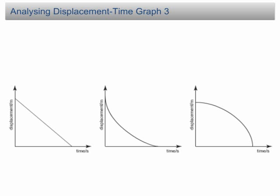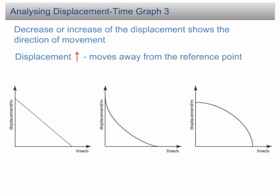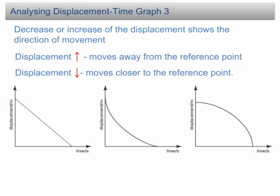Analyzing displacement time graph 3. Let's look at a few more examples. This time, we are going to study the motion where the displacement decreases over time. We can see that in all three cases, the displacement starts from a positive value, then decreases to zero. Decrease or increase of the displacement only shows the direction of movement. All displacement must be measured from a reference point. You can take any point as the reference point. For a positive displacement, it increases when the object moves away from the reference point, and decreases when the object moves closer to the reference point.